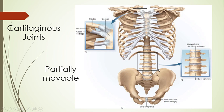Another example is your intervertebral discs in your spine. Yes, you may be able to bend all the way over to one side or bend forward and move around, but that is the result of small individual movements from each vertebra combining together to cause that overall movement. Overall, the movement of the vertebral column or individual vertebra is actually very small.